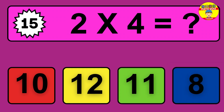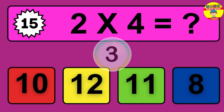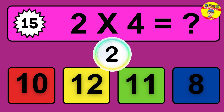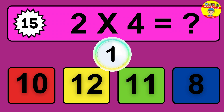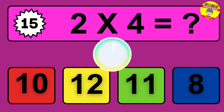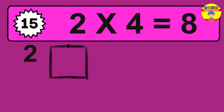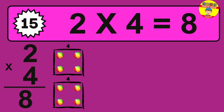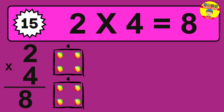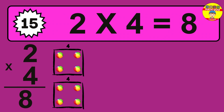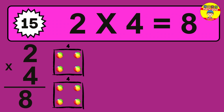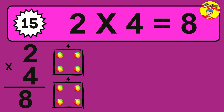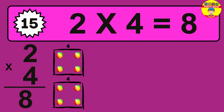Question 15. 2 times 4 equals what? The answer is 2 times 4 is 8. To calculate, we have 2 groups with 4 balls each one. So how many balls do we have? 8 balls.